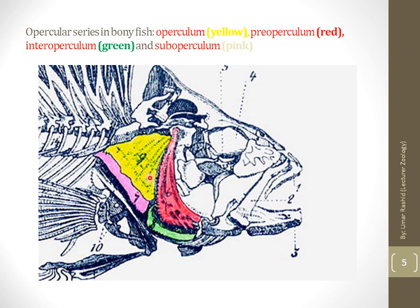The operculum is the thinnest bone segment out of the opercular series and is located directly above the gills. The inter-operculum, shown in green, is triangular in shape. It borders the sub-operculum posterodorsally and the pre-operculum anterodorsally — meaning it borders the red (pre-operculum) on the anterior side and the pink (sub-operculum) on the posterior dorsal side.